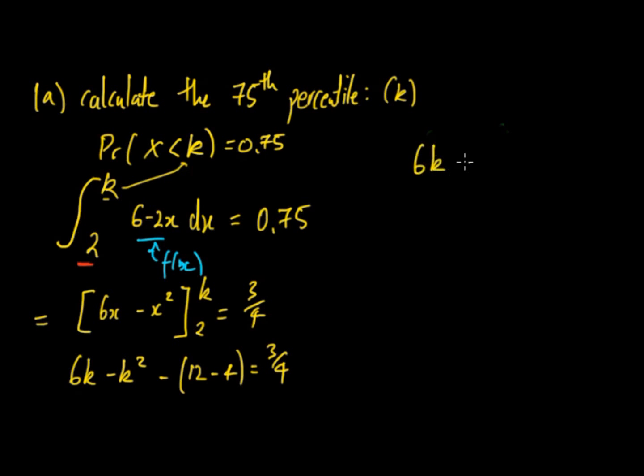Continuing the calculation, we get 6k minus k squared minus 8 is equal to 3 on 4. 6k minus k squared minus 8 times 4, so that's 32 on 4 minus 3 on 4 is equal to 0.